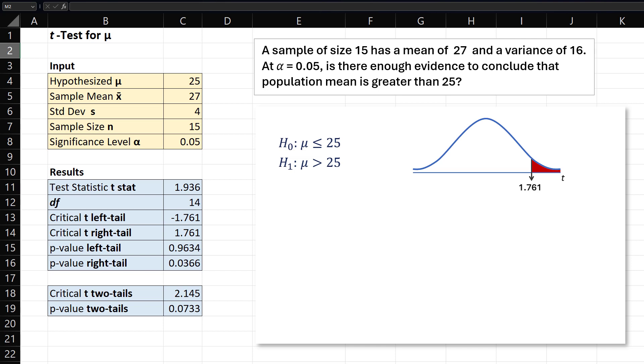Suppose we're testing if the population mean is different from 25. The alternative hypothesis would be that the mean is not equal to 25, and the null hypothesis would be that the mean equals 25. This is now a two-tailed test, with a two-tailed critical value of 2.145.